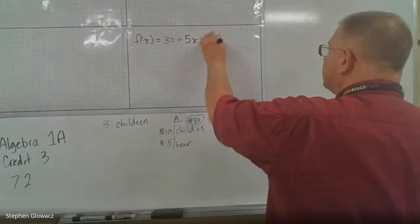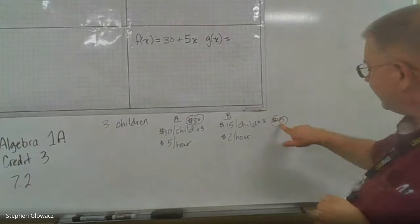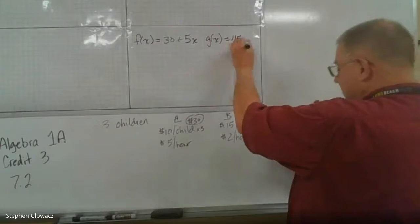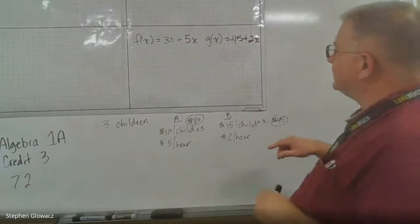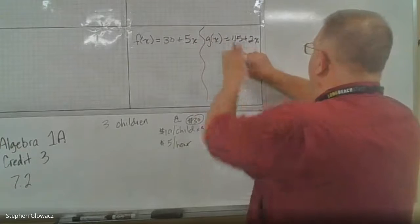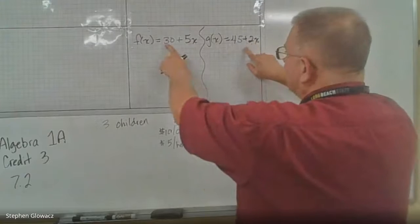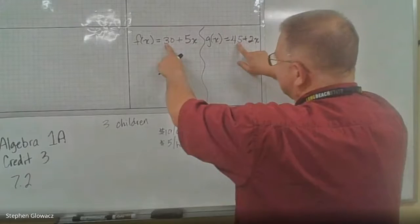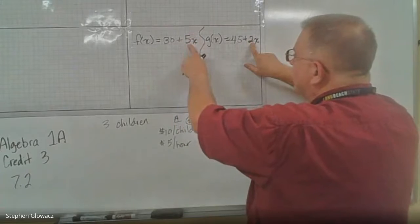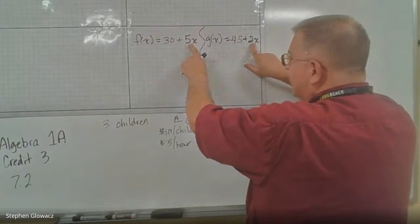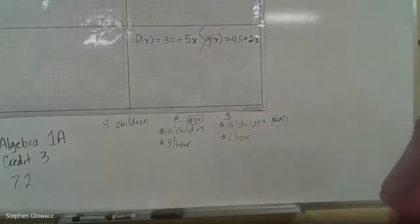Babysitter B, we'll call that G of X. That is the flat fee of $45 for the three children plus $2 per hour. Notice: babysitter B charges more up front at $45 but less per hour. So even though babysitter A starts lower, since babysitter A charges more per hour, at some point the amount babysitter A charges will equal babysitter B. That's what we have to find out.